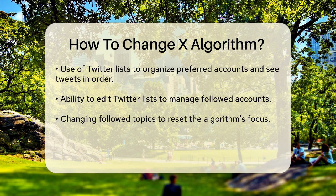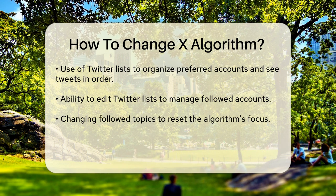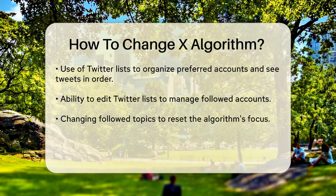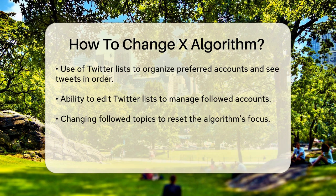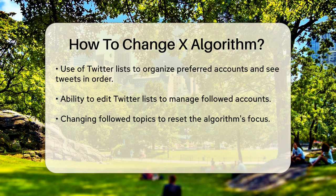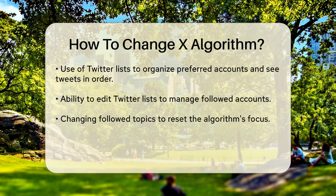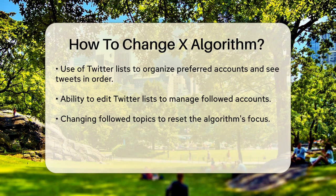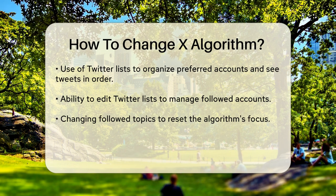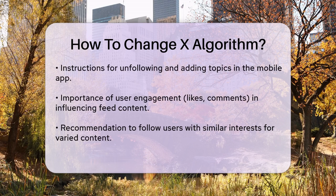Changing the topics you follow is also a great way to reset your algorithm. On your mobile app, tap on your profile icon, select Topics, and then unfollow any topics you're no longer interested in. You can also add new topics from the suggested list or by tapping More Topics. This will make your timeline feature the topics you care about.